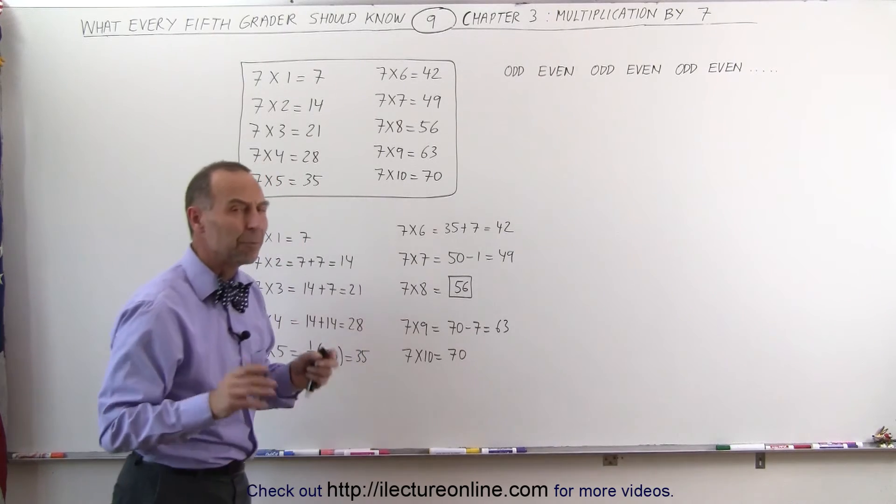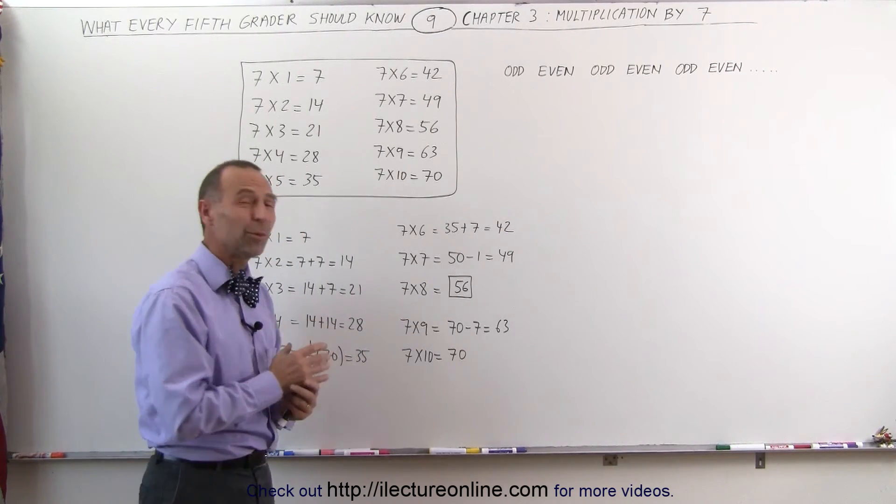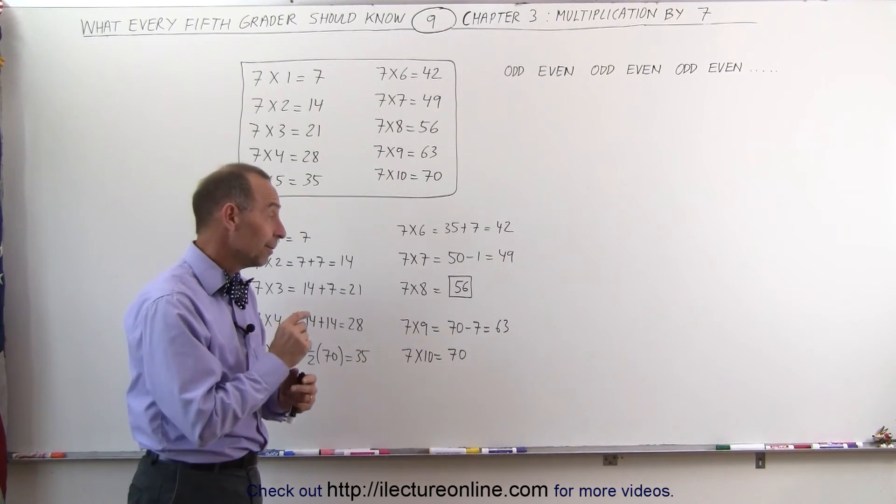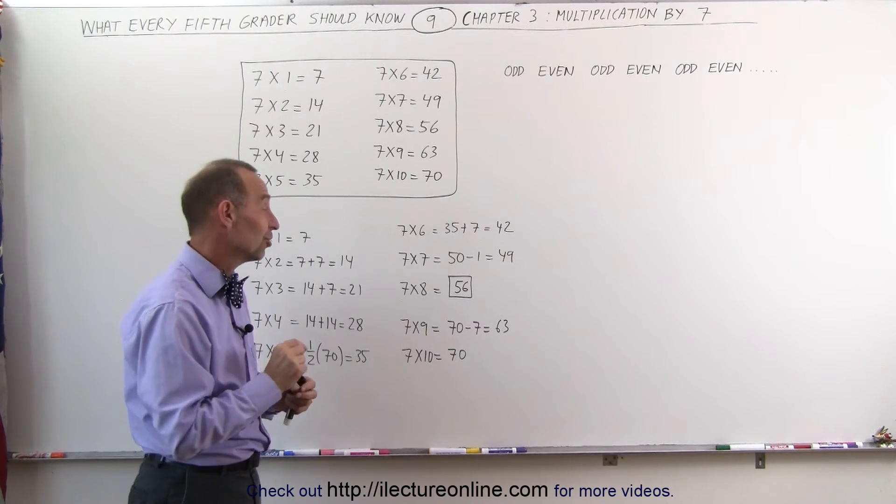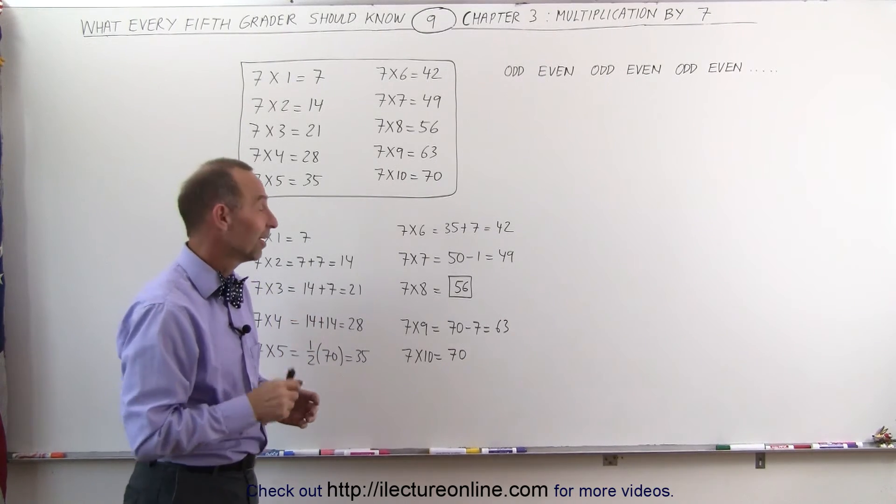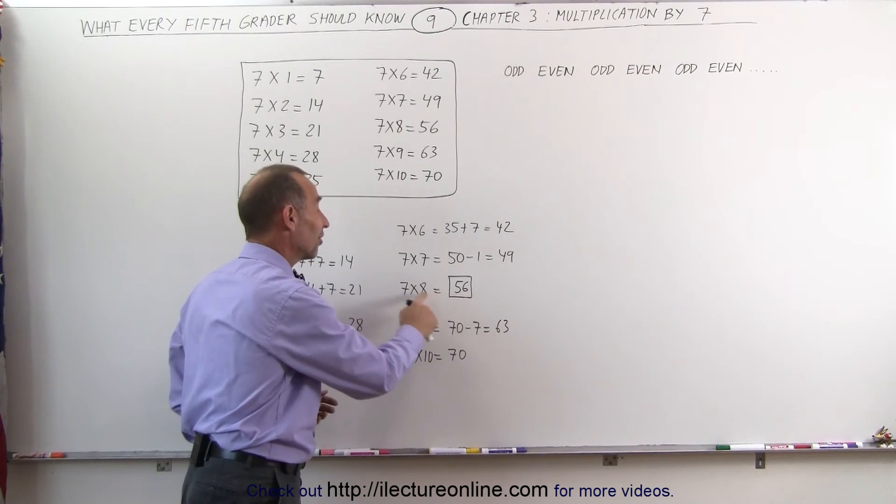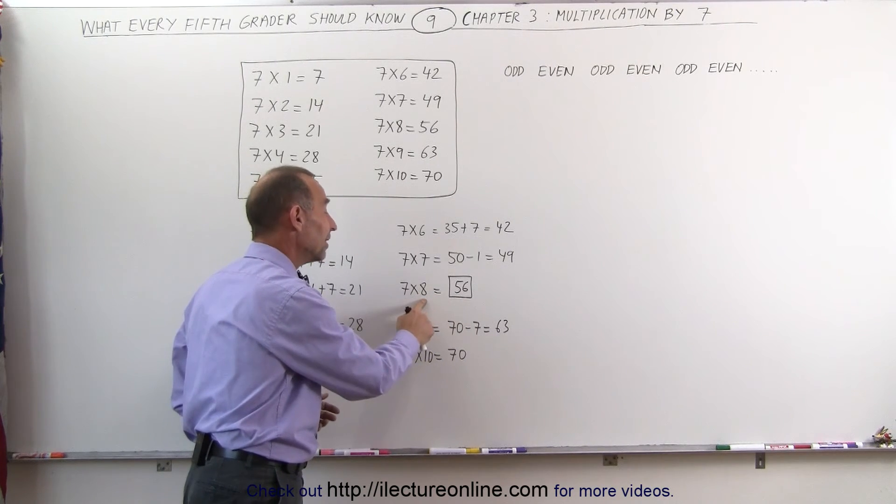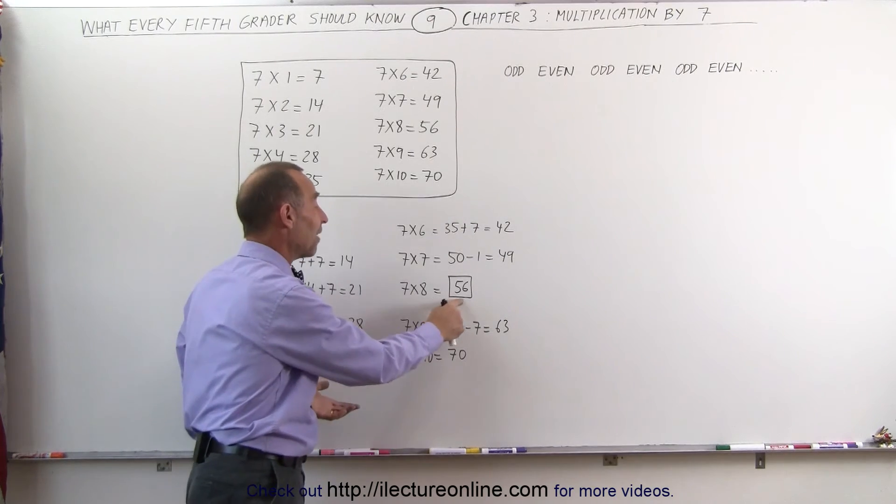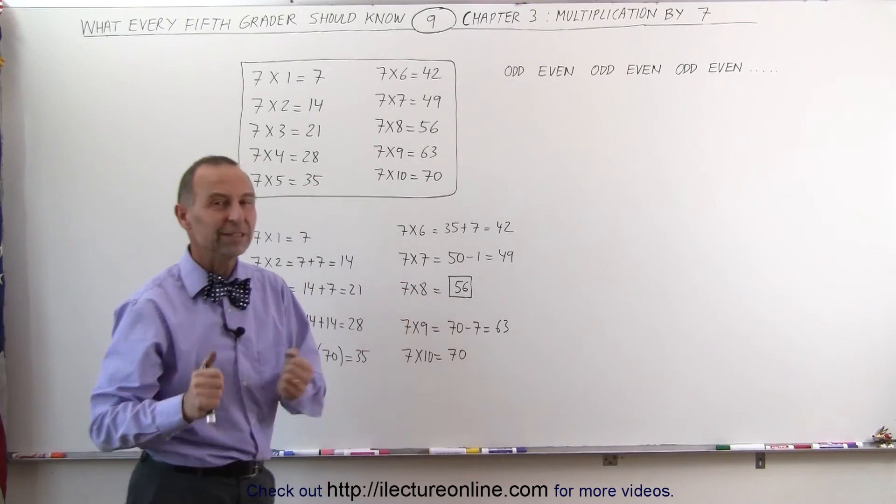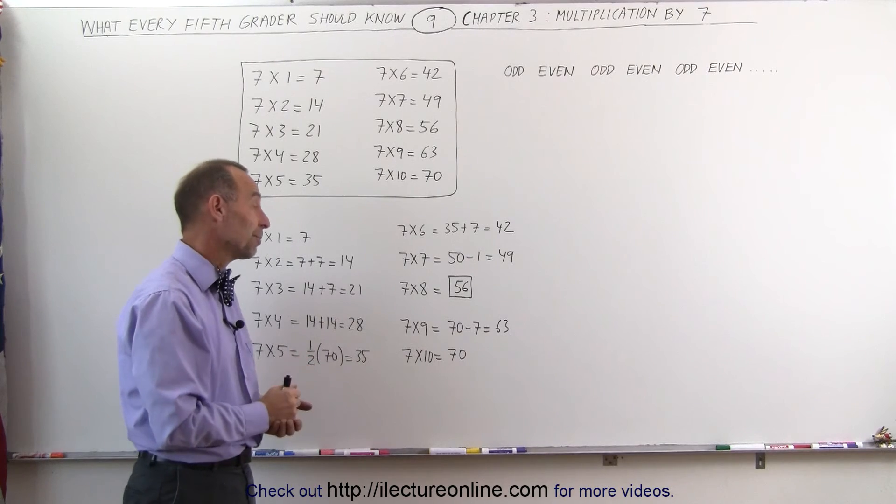Now, the number 7 times 8, I remember when I was a kid, I had a lot of trouble with that multiplication. But my wife used a really neat trick when she taught our kids how to do that. She said 5, 6, 7, 8. So 7 times 8 is 56, because you simply look at the numbers 5, 6, 7, 8. A real neat trick, makes it a lot easier to remember.